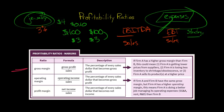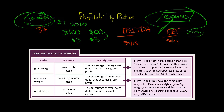Let's take a look at gross margin. We've got gross profit, which is sales minus cost of goods sold, and then we divide that by sales. Leaving aside pricing strategy, gross margin is telling us about the company's ability to manage its cost of goods sold.